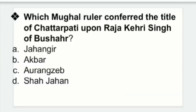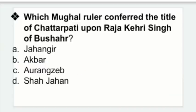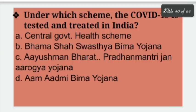Which Mughal ruler conferred the title of Chhatrapati upon Raja Kehri Singh of Busaher? Options: Jahangir, Akbar, Aurangzeb, Arsa Jahan. Right answer — Aurangzeb conferred the title of Chhatrapati upon Raja Kehri Singh of Busaher.